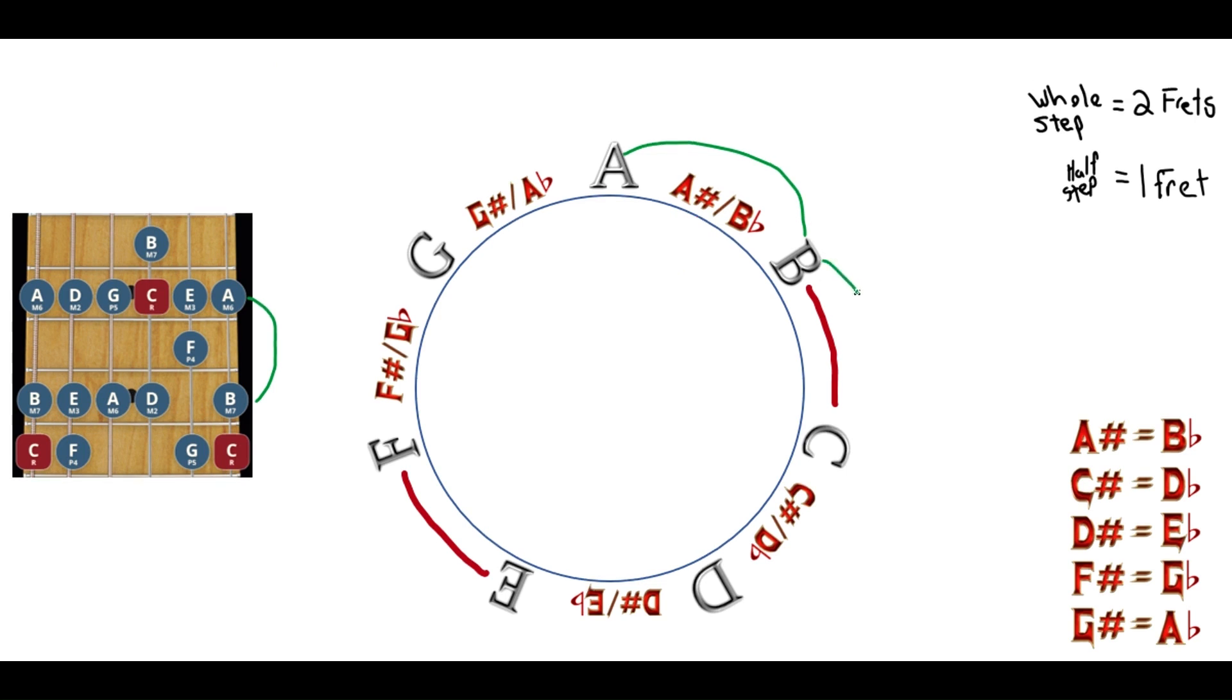If however you move from the B note to the C note, there are no sharps or flats in between these two notes. You are only moving one fret, which is a half step.